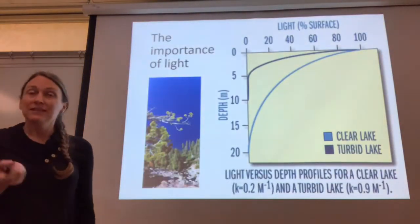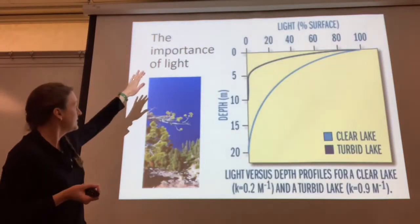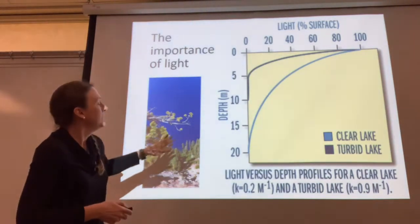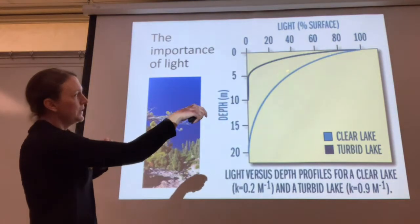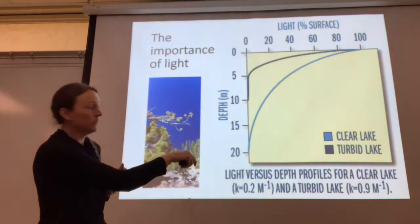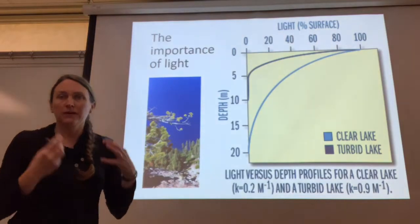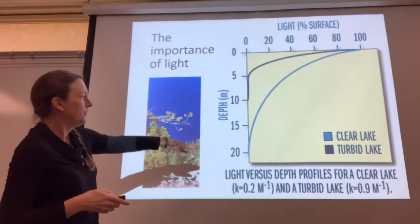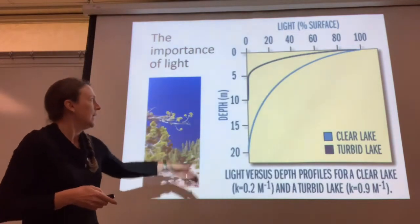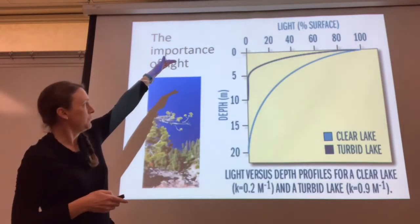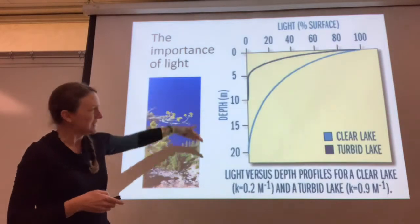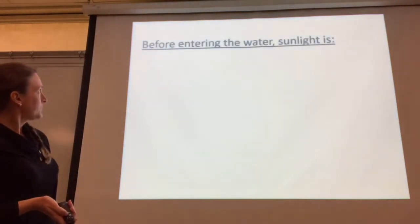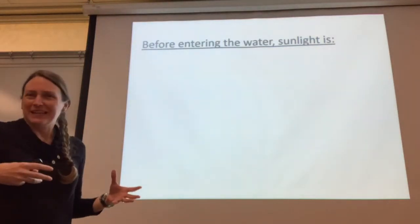Moving on to light — this is a picture of Crater Lake, one of the deepest, clearest lakes we have, so light is going to penetrate much farther down than in a lake that's turbid, cloudy, or murky. You can calculate light profiles versus depth; these figures often show depth at zero at the top going downward, which is a nice way to visualize changes with depth.